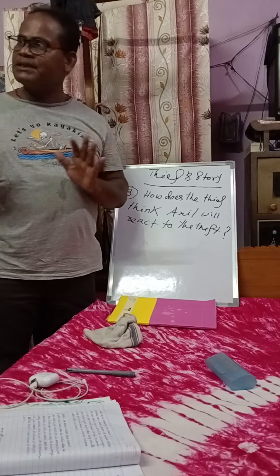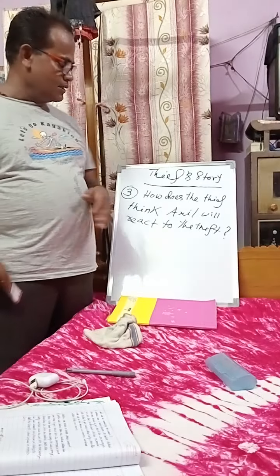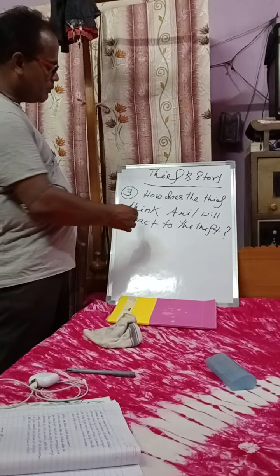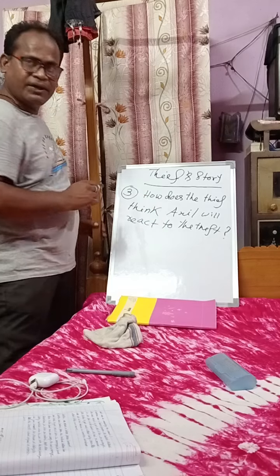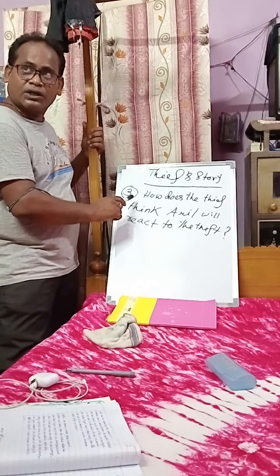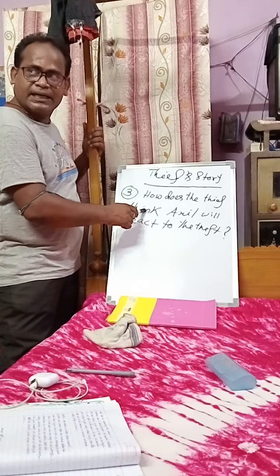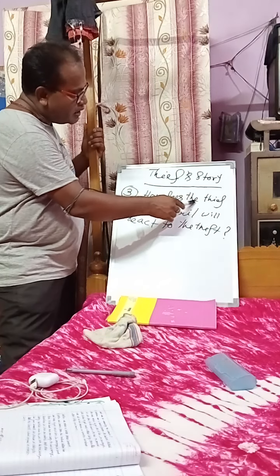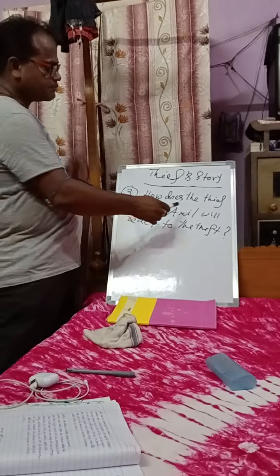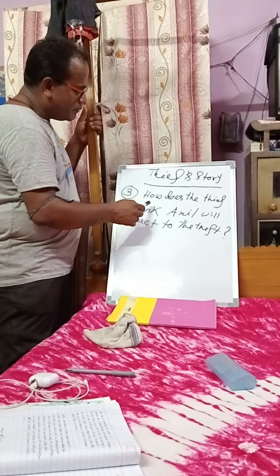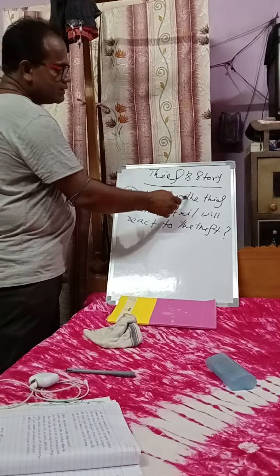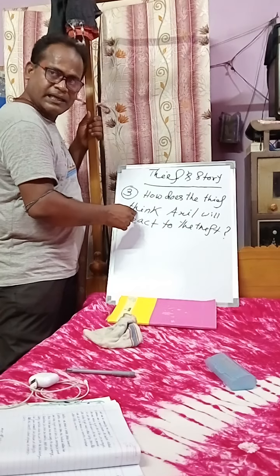The answer to question three — how does the thief think Anil will react to the theft — you don't write 'how' and 'does' in the answer. You use the past form: instead of 'think' you write 'thought.' So you write: the thief thought that...